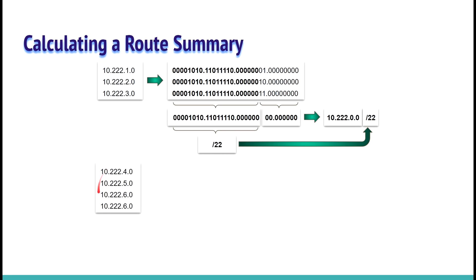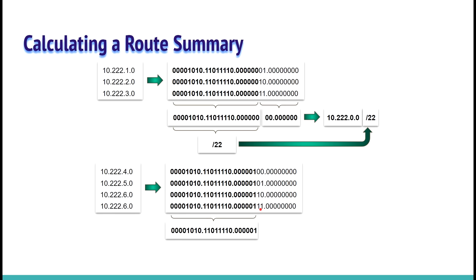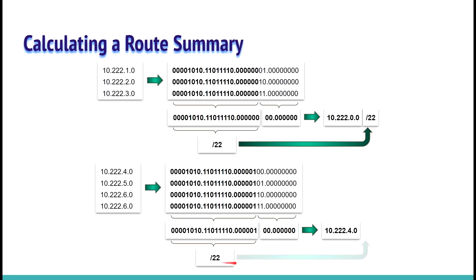For the second example, we have four subnets. We do the binary representation and check all matching bits. We move the matching part to our summary route, and the remaining bits become zeros. The decimal representation is 10.22.4.0, and the network mask is again /22. So the second summary route is 10.22.4.0/22.